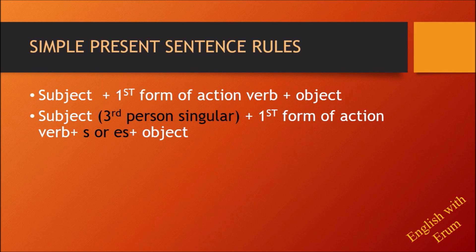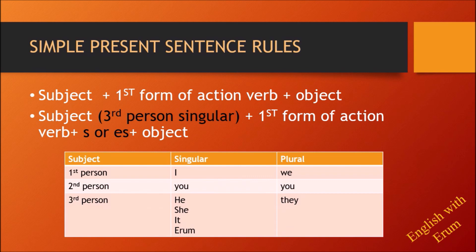Let me show you a chart of subjects. First person singular: I. Second person: you. Third person singular: he, she, it, or a name. And for plural: first person is 'we', second person is 'you', third person plural is 'they'. If the subject is third person singular — he, she, it, or a name — we add 's' or 'es' to the first form of the action verb, then the object.